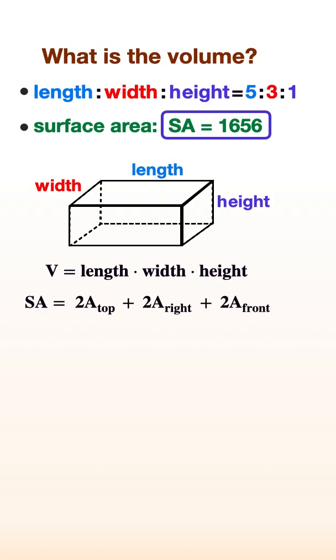Since the ratio of the side lengths is 5 to 3 to 1, we can represent the length as 5x, the width as 3x, and the height as x.